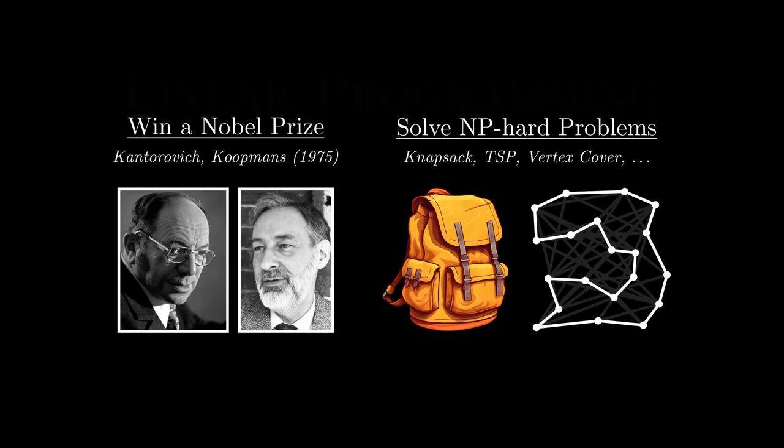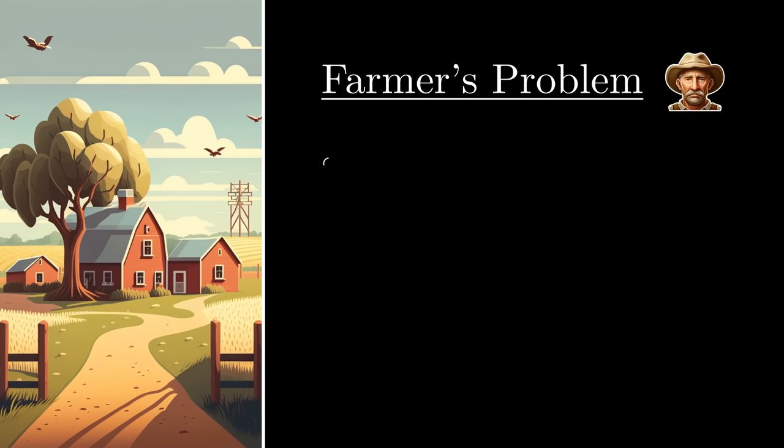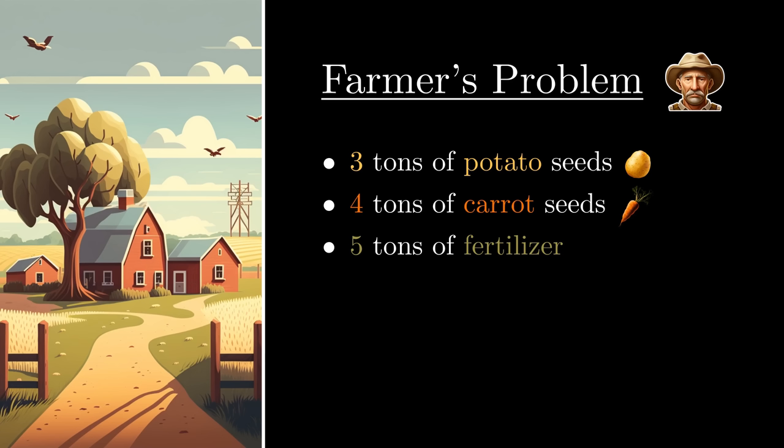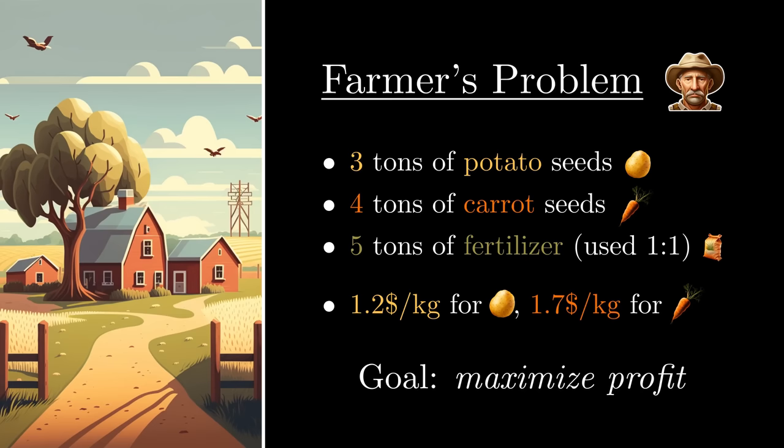To see what it's all about, let's start with a simple problem. With the planting season steadily approaching, your farmer friend presents you with the following task. You have 3 tons of potato seeds and 4 tons of carrot seeds. To grow the crops efficiently, you also have 5 tons of fertilizer, which has to be used when planting in a 1 to 1 ratio. The profit is $1.2 per kg for potato seeds and $1.7 per kg for carrot seeds. Your goal is to maximize your profit this season. How much potatoes and carrots should you plant?